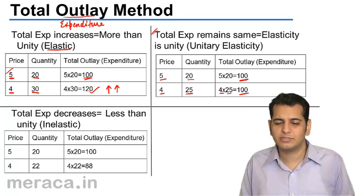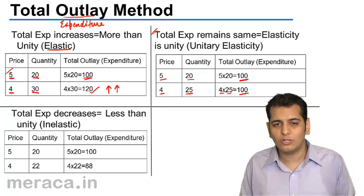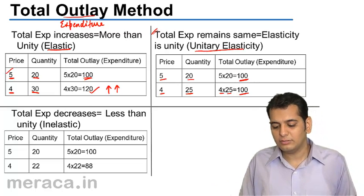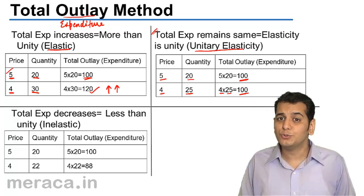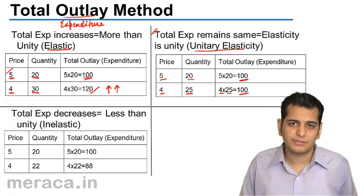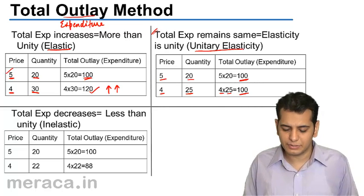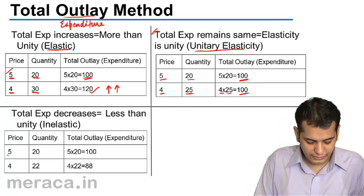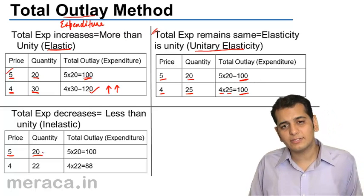My total outlay is not changing because of a change in price. The price has changed and my consumption has also changed, but my expenditure has not changed. When expenditure remains constant, we say that the elasticity of demand is unitary elasticity.